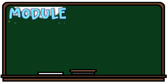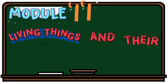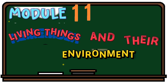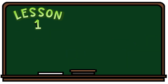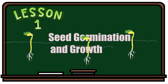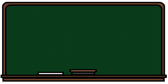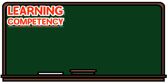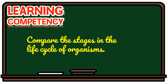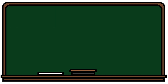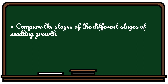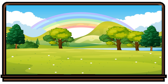Welcome to Science 4, Module 11, for Quarter 2, Week 4. In this module, we are going to discuss all about living things and their environment. Our Lesson 1 for Module 11 is all about seed germination and growth. The learning competency is to compare the stages in the life cycle of organisms. Specifically, this module will help you compare the different stages of seedling growth. Class, are you ready to learn? Let's learn!